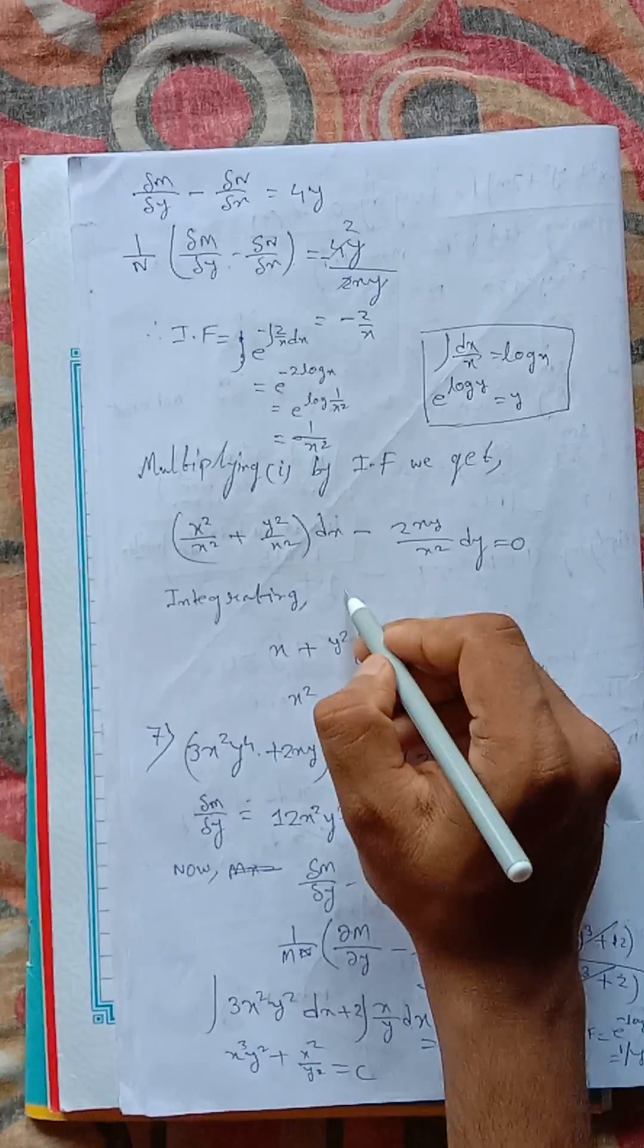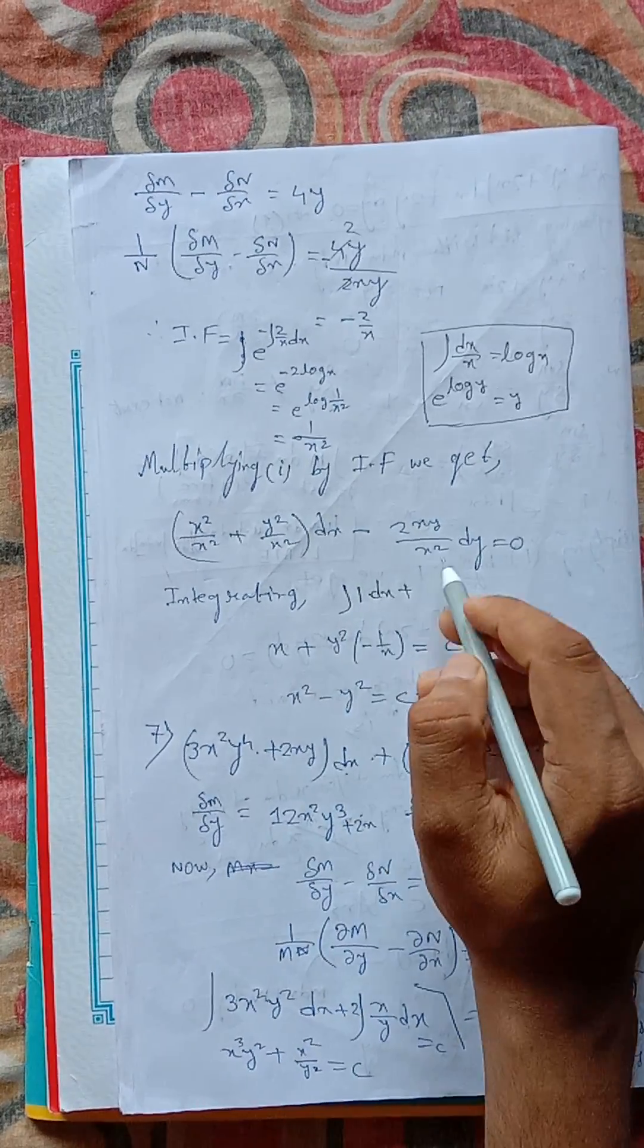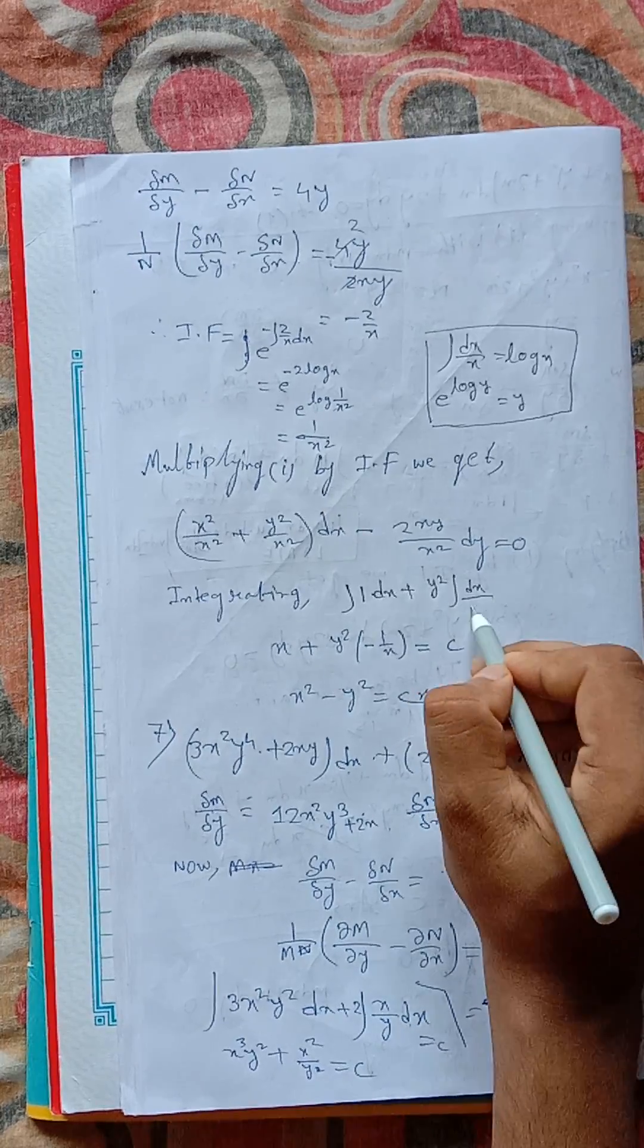This becomes 1, so integration of 1 dx plus y square dx by x square minus 2y by x dy equals to 0.